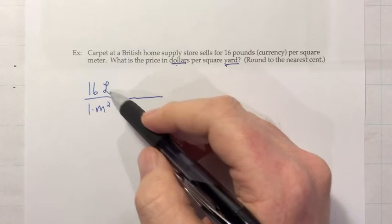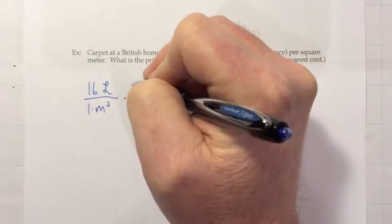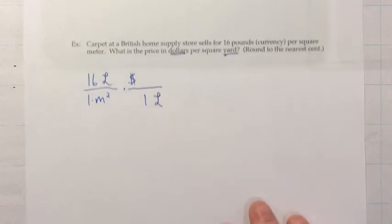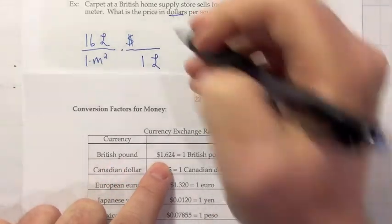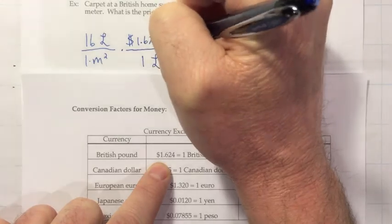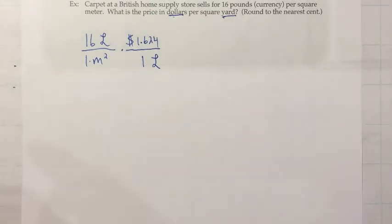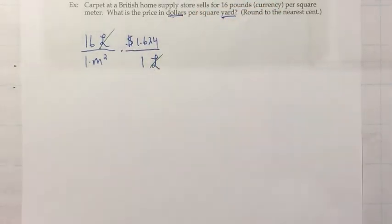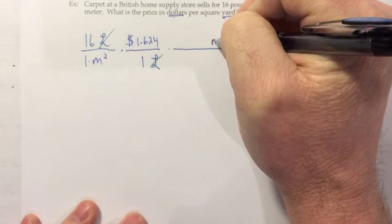So on the last one I started with the numerator first. I guess I'll go ahead and do that again. So I have pounds up top, so I'll put pounds in the bottom. And that's currency, so I want to change it to dollars. I know from our currency chart I have the option of putting a 1 in the bottom on all of these. So I'm going to do that. And bring in our currency conversions. Pounds are right up top. And we have 1 pound is 1.624 dollars. Notice I definitely don't have these memorized. So every time I need the money conversions I go get the chart. And then that will take care of the pounds. And we will be in dollars per square meter. But that's not what we want.